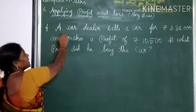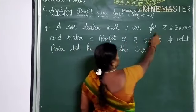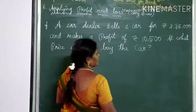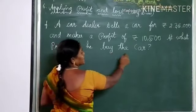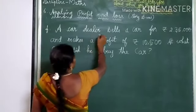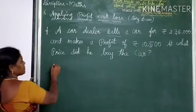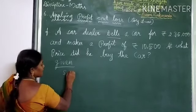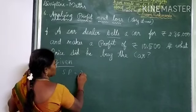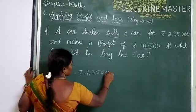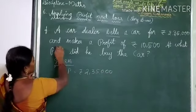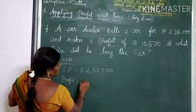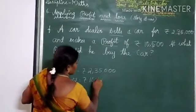Come to the next question. A car dealer sells a car for rupees 2,35,000 and makes a profit of rupees 10,500. At what price did he buy the car? So the selling price of the car is rupees 2,35,000. Profit is rupees 10,500.